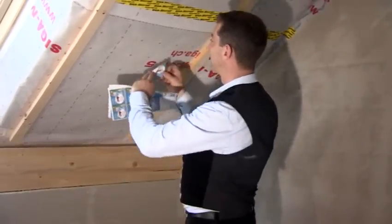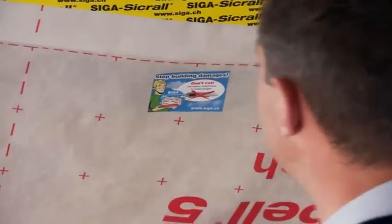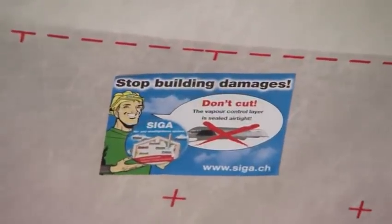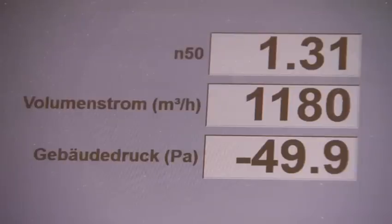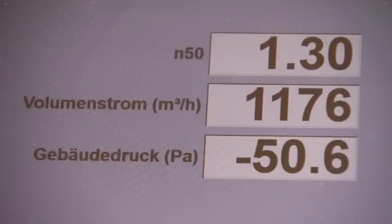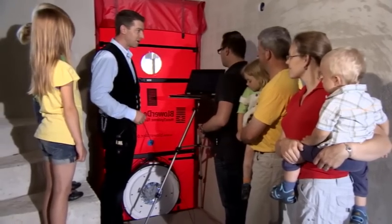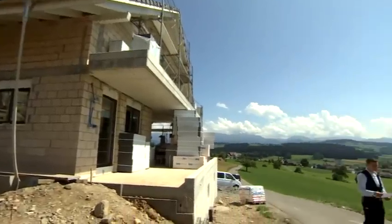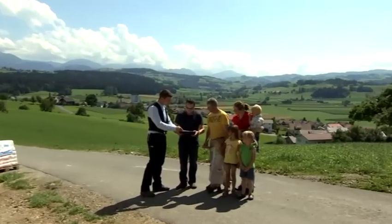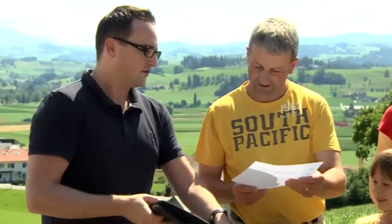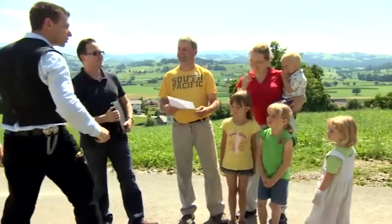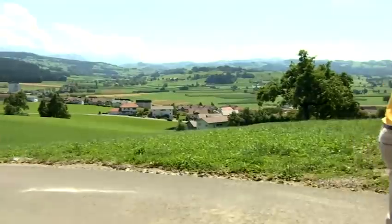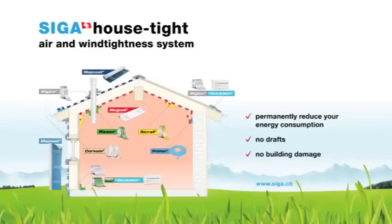The professional secures his work by applying a warning sticker. Finally, the craftsman repeats the blower door measurement in the presence of the building owner and the architect. What improvement has been achieved by the corrections? The air change rate is now well below the required maximum of 1.5. The architect hands the building owner a test record for the measurement that was performed. The Seager house-tight air and wind tightness system reduces heating costs, eliminates drafts, and prevents building damage.